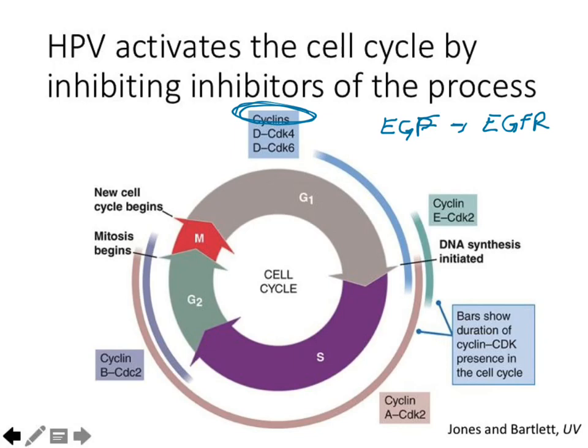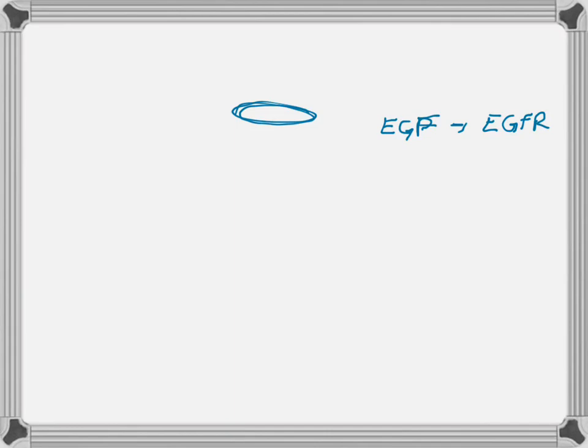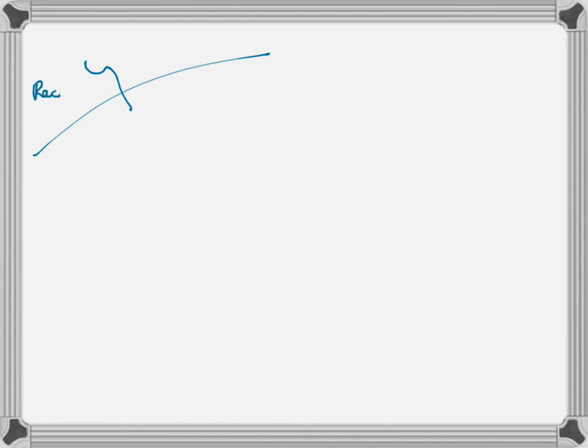Let me draw out how this activation occurs. I'll draw a cell surface here with our EGFR receptor. EGF is a hormone that binds to this receptor and triggers a signal transduction pathway where one protein activates the next, so on and so forth. Ultimately, the end result of this pathway is in the nucleus — activation of transcription of the cyclins.